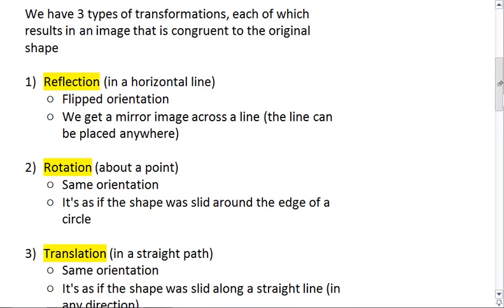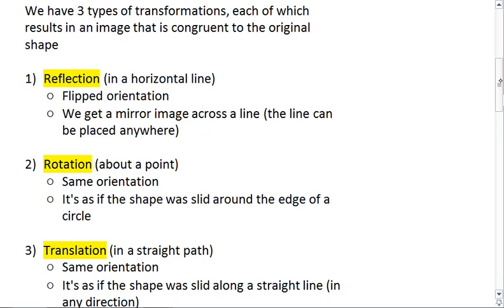We have three transformations that we'll look at, each of which results in an image that is congruent to the original shape. The first one is a reflection in a horizontal line. We get what's called a flipped orientation, which means we get a mirror image across a line and the line can be placed anywhere.